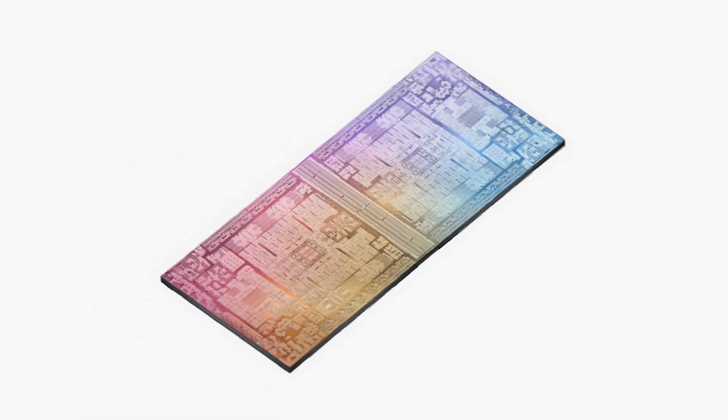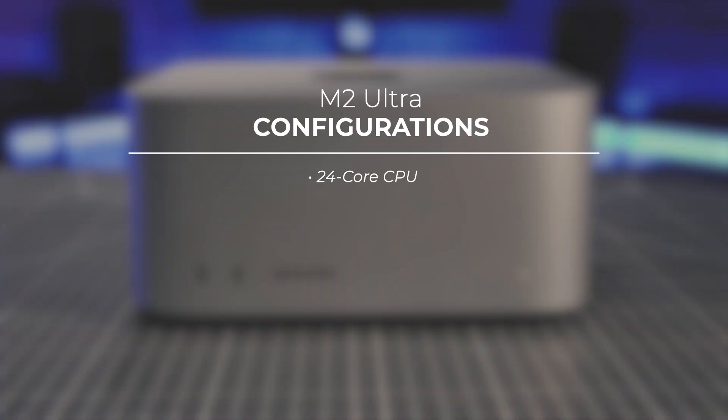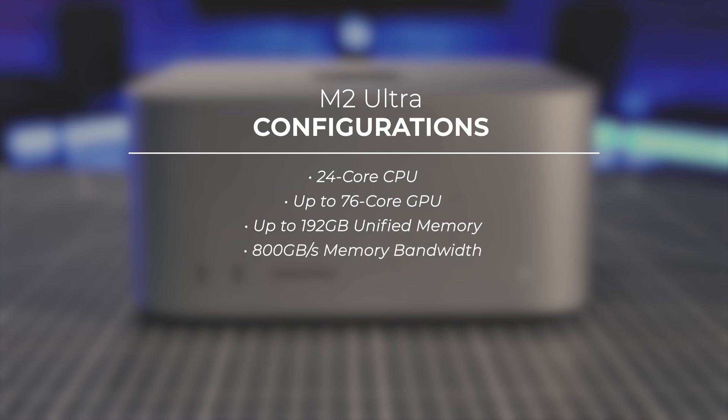To briefly go over the specs, the M2 Ultra doesn't hold back. It is literally two M2 Max chips fused together, though it operates as a single all-powerful processor with double the resources at its disposal. A 24-core CPU, up to 76-core GPU, up to 192 gigabytes of unified memory, and a blistering 800 gigabytes per second memory bandwidth. Those getting into the exploding field of machine learning can also leverage the M2 Ultra's 32-core neural engine.